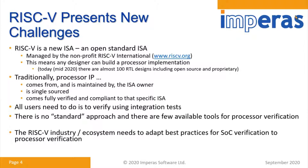Traditionally, processor IP — the RTL for building a processor — comes from the ISA owner, and it's typically single source, and you get it fully verified. As such, it's validated and compliant to that specific ISA because it comes from the owner. All you need to do as a verification engineer is really do the integration tests. But in the RISC-V world, there is no industry standard approach and very few available tools for processor verification. They tend to be internal and proprietary to the ISA developer. So the RISC-V ecosystem really needs to adapt best practices from proprietary ISAs for processor verification.